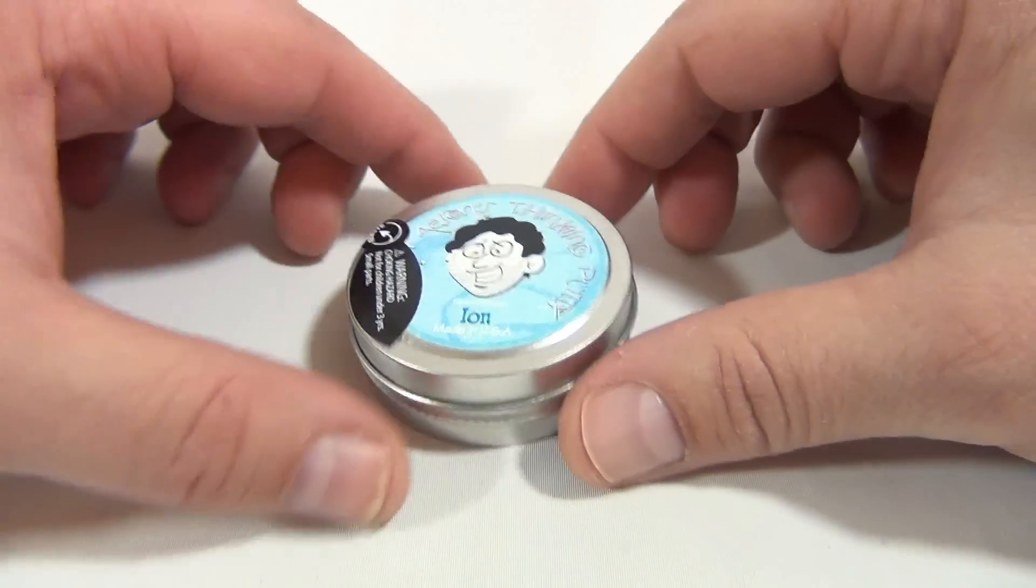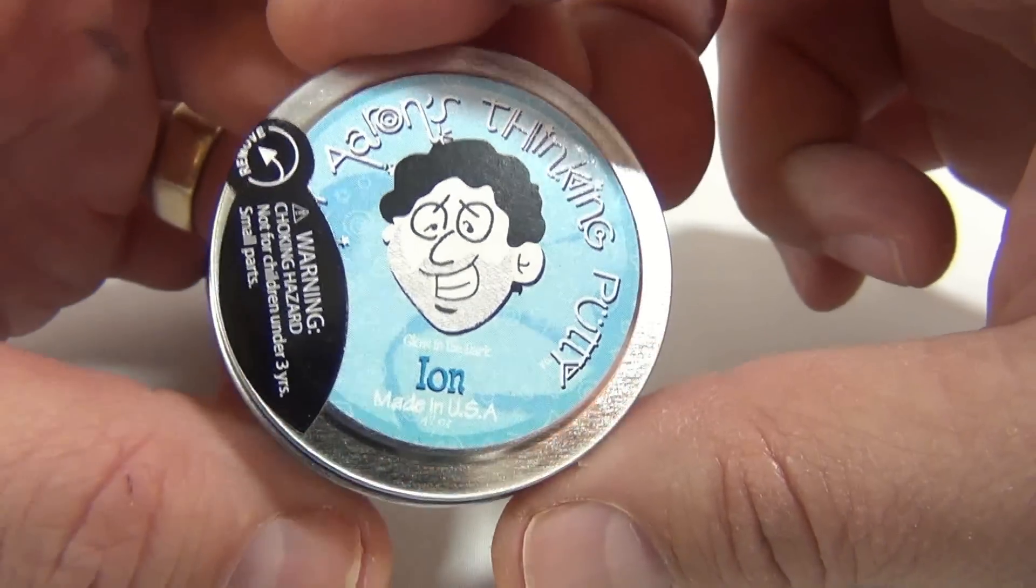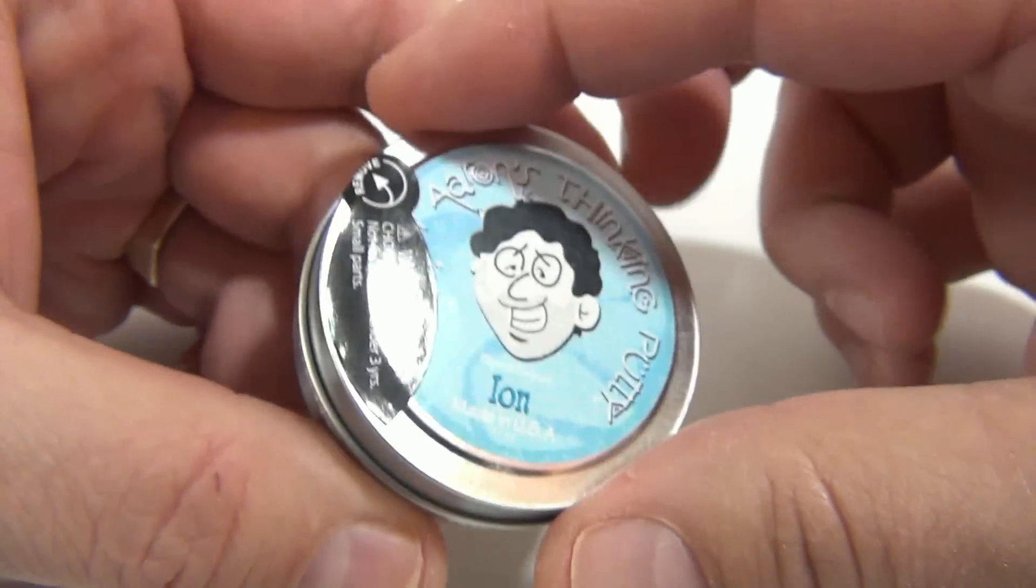Alright, pretty neat. This is the Aaron's Thinking Putty Ion Color. If you want to see more of these putties, check the description or search the channel for putty. Glow in the dark, yeah, you saw that, pretty cool.